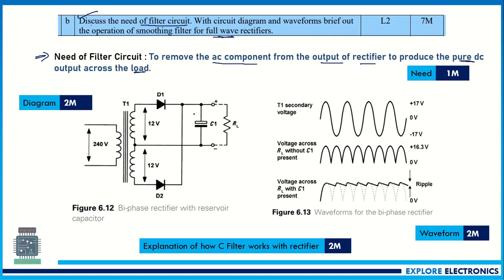That answer carries one mark. Then write the full wave rectifier circuit with a capacitor filter and draw the waveforms — the AC signal, the output without capacitor filter, and after applying a capacitor filter. Writing this clearly indicates you understand all the concepts of rectifier and filter circuits. Adding brief explanation with the diagram and waveform carries seven marks.